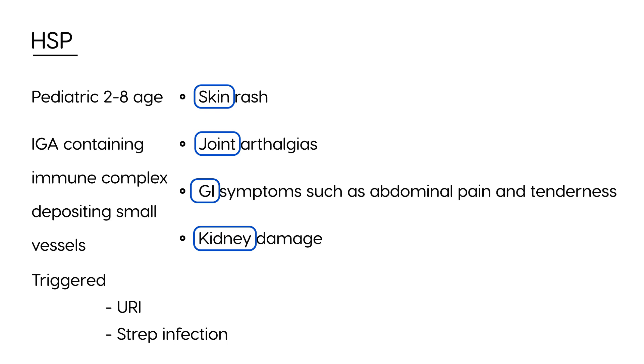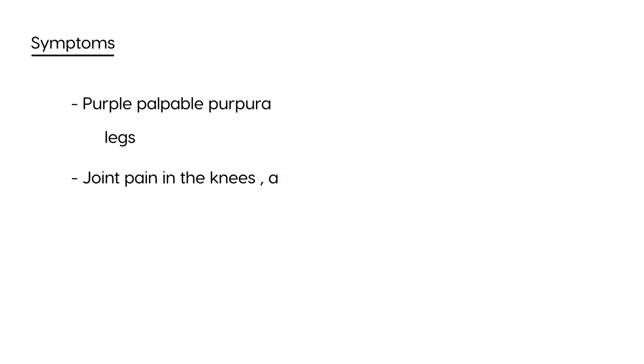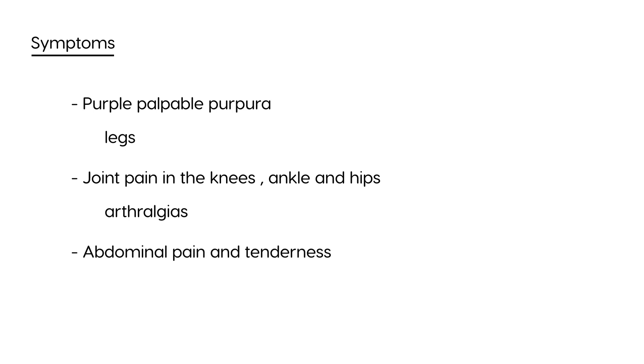Typically, a child will have an upper respiratory infection and then develop HSP. The characteristic rash is a purple palpable purpura, usually on the legs and feet. Joint pain is usually in the knees, ankles, and hips. GI symptoms include abdominal pain and tenderness — nonspecific by themselves, but combined with purpura and arthralgias, you strongly suspect HSP. In some cases it progresses to renal failure, presenting with hematuria.